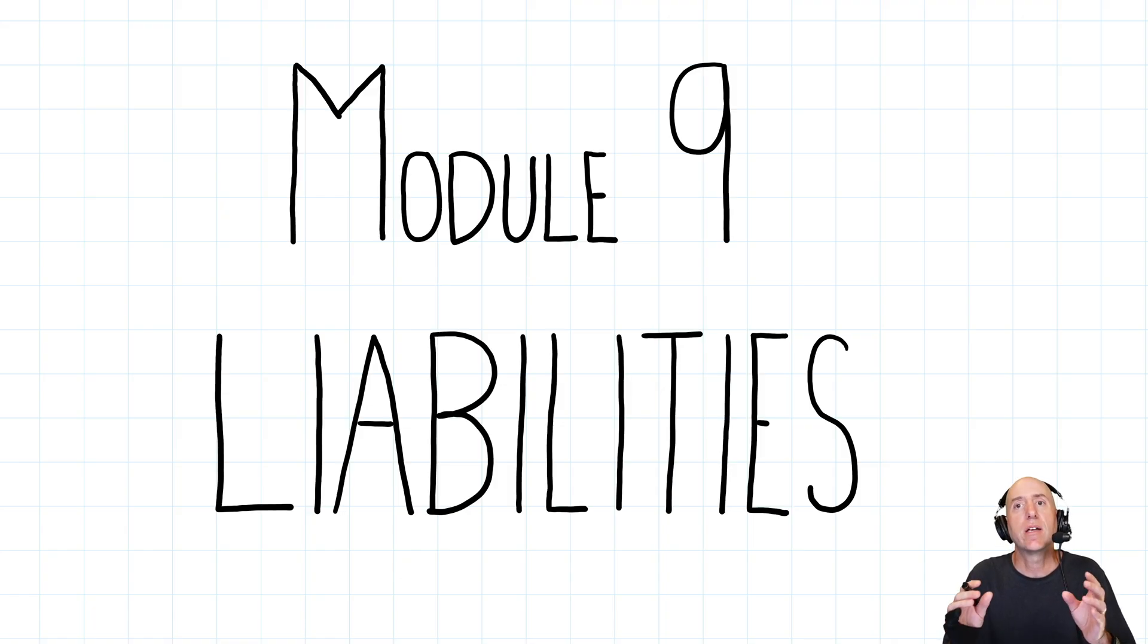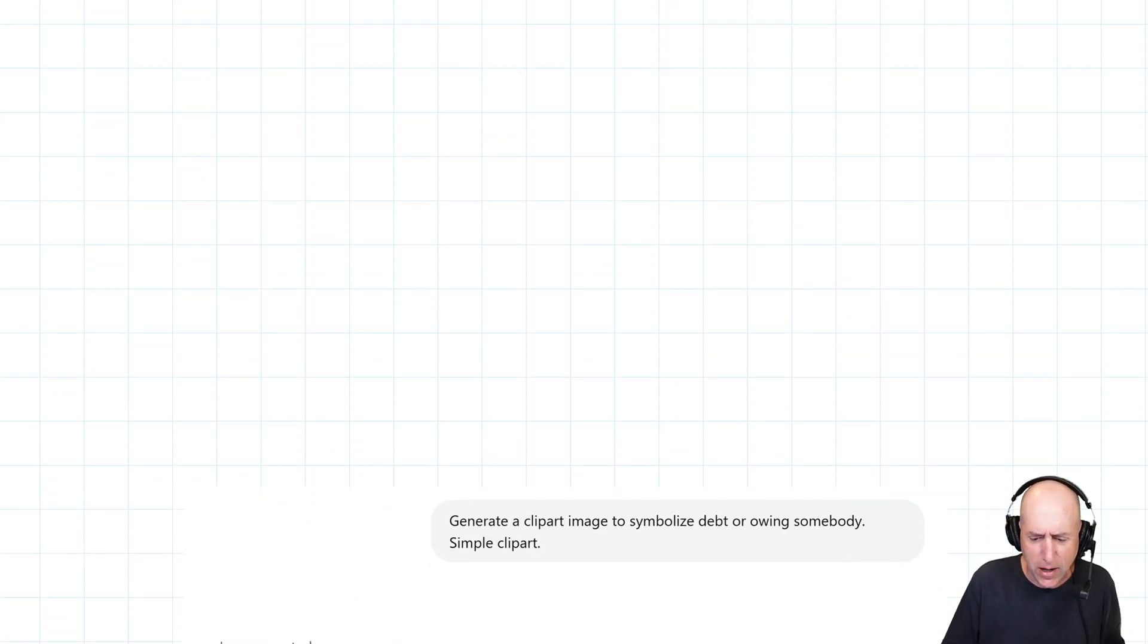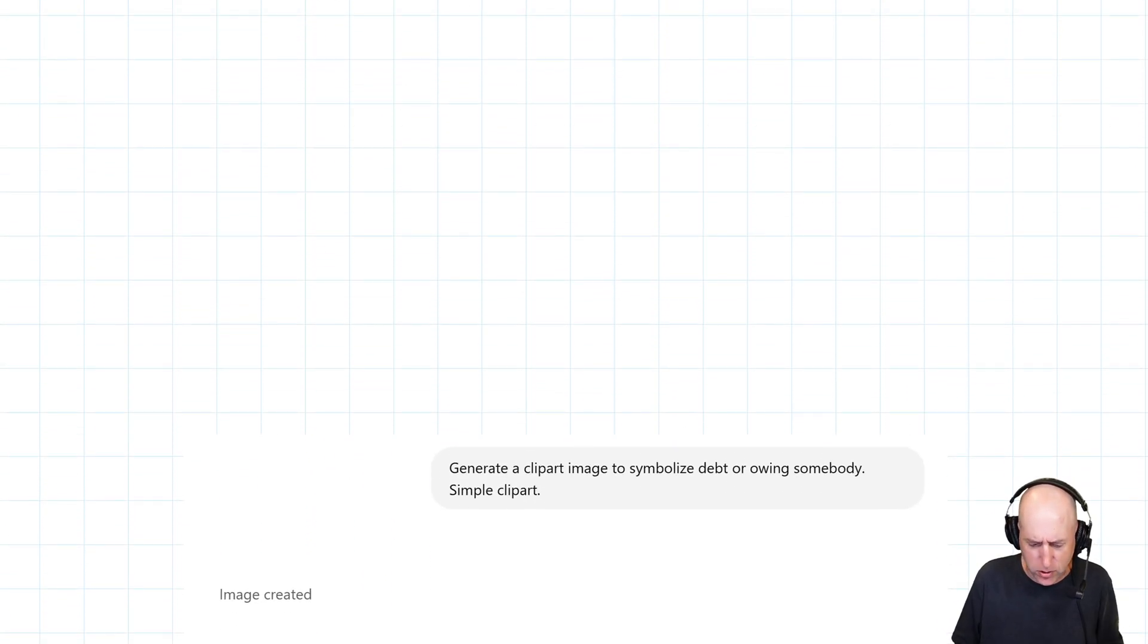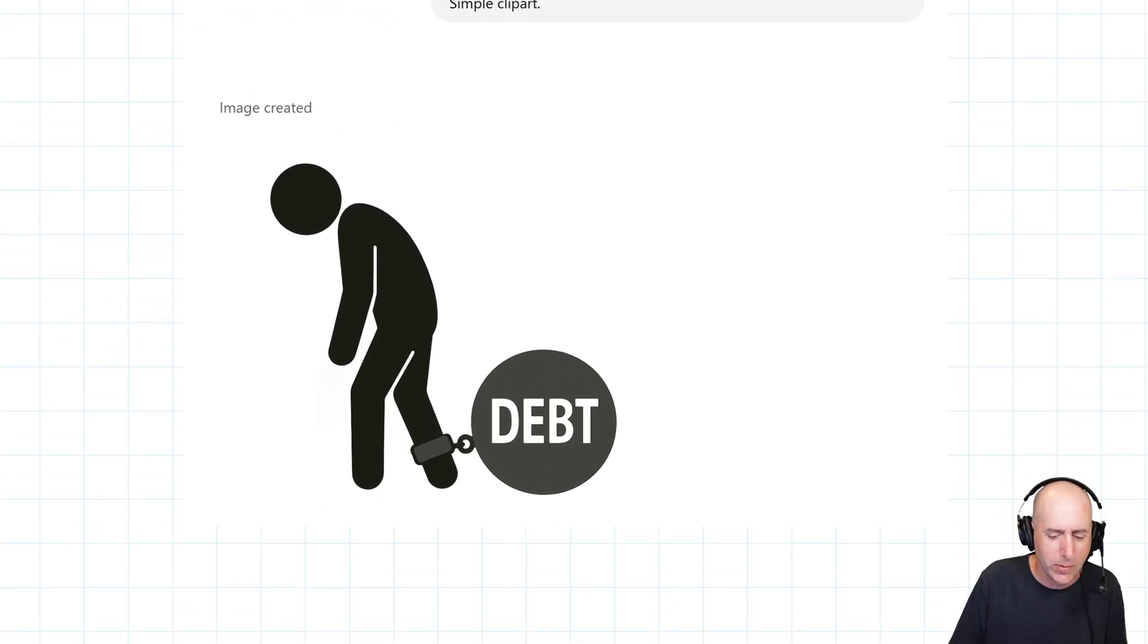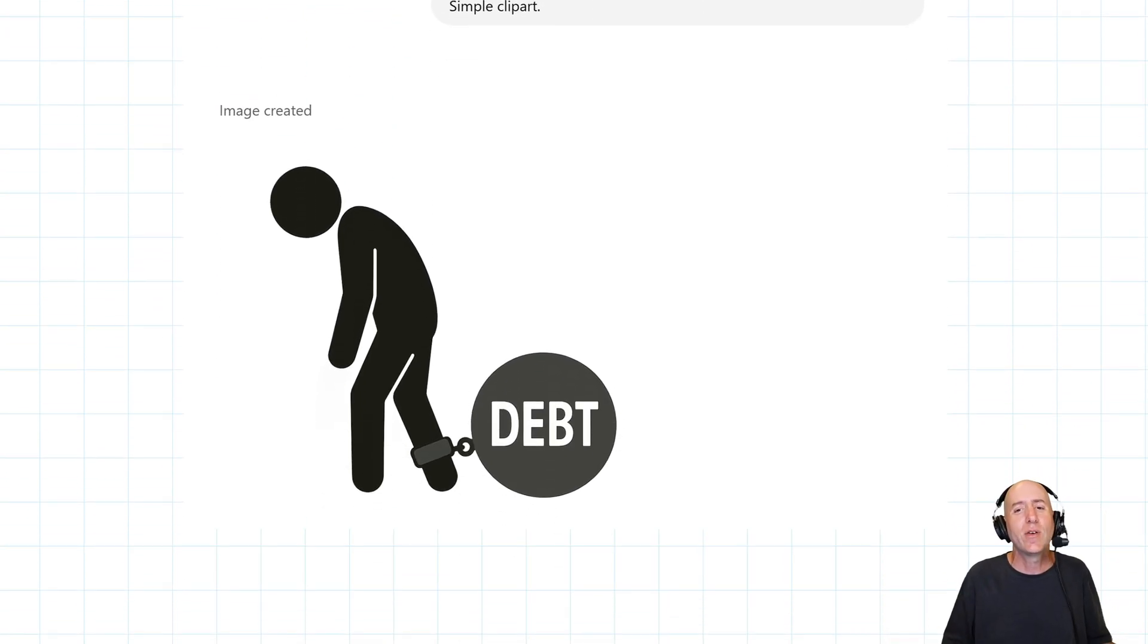As I was getting ready to prepare this, I wanted to draw a clip art image of liabilities, and I wasn't sure what to draw. So I asked ChatGPT, 'Hey, what's an example of a picture I might draw? Generate a clipart image to symbolize debt or owing somebody.' And this is what it came up with - a pretty depressing view of debt.